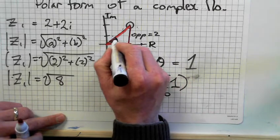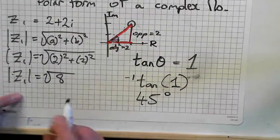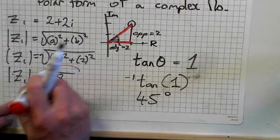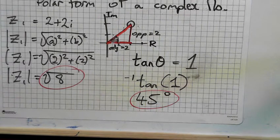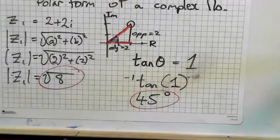So this angle up here is 45 degrees. Now we've got the information we need. The radius is square root of 8, and the angle is 45 degrees.